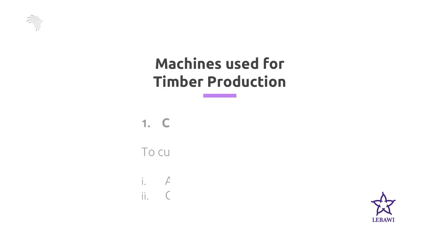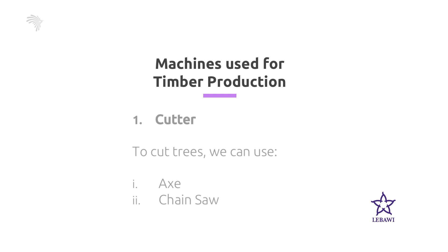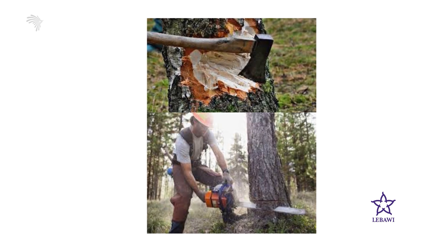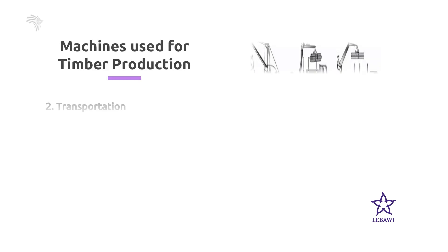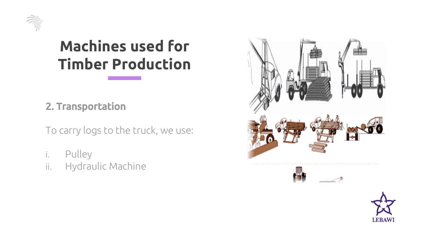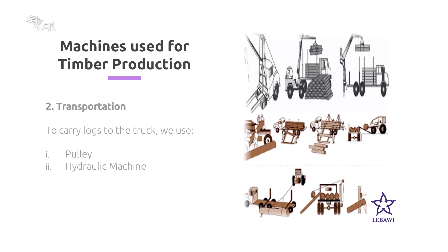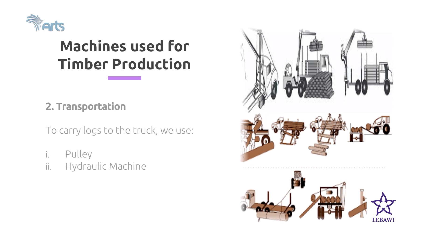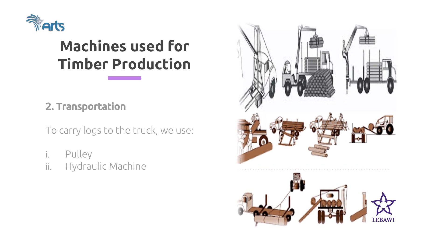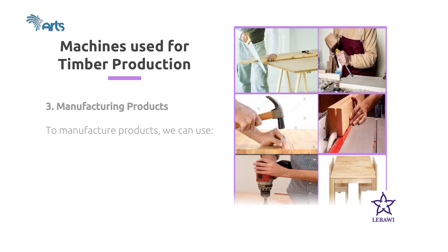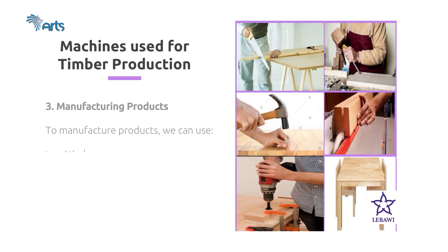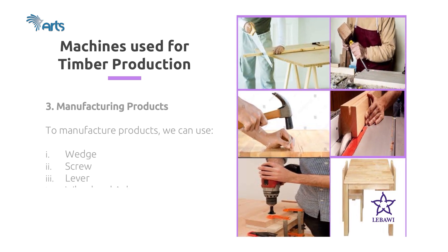The simple machines important for making furniture from Koso tree include: first, for cutting the tree, we use axe and chainsaw, which are examples of wedges. Once the wood is cut, we transport it to the manufacturing industry using pulley systems and hydraulic machines. In the manufacturing process, we use wedge, screw, lever, and wheel and axle.